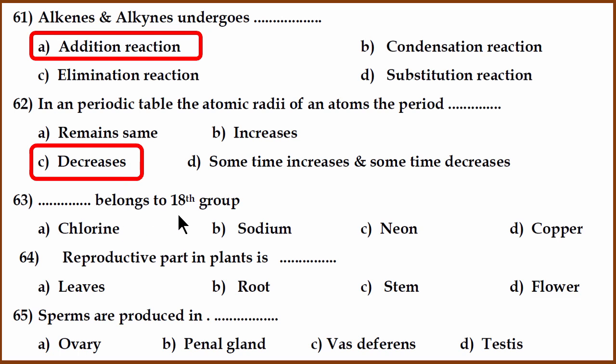All right. So which one belongs to the 18th group? It is neon. Neon is the 18th group element. 18th group is the last group, also called noble gases - neon, argon, xenon. That is the 18th group.